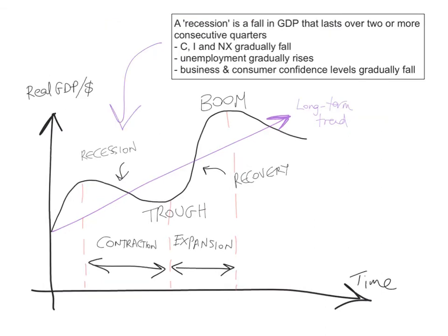A recession is a fall in GDP that lasts over two or more consecutive quarters — a quarter being three months. During a recession, there's a fall in real GDP lasting two or more consecutive quarters. Consumption spending, investment spending, and net exports gradually fall. Unemployment gradually rises, and business and consumer confidence levels gradually fall. For it to be labelled a recession, it must last over two or more consecutive quarters.